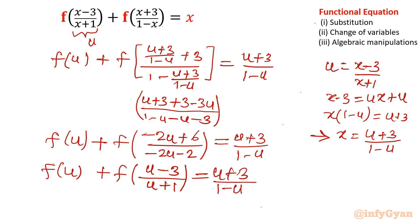We call this equation number 1: f(u) plus f of (u minus 3 over u plus 1) equals (u plus 3) over (1 minus u).